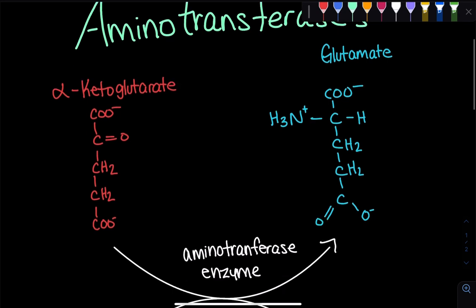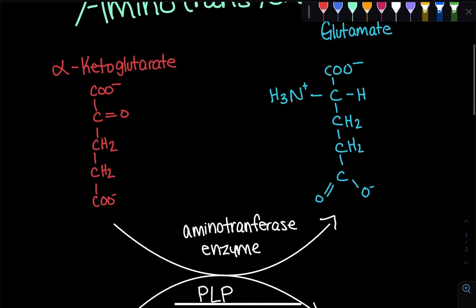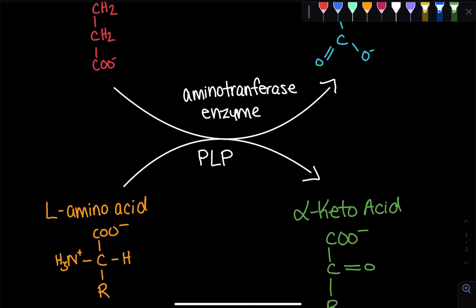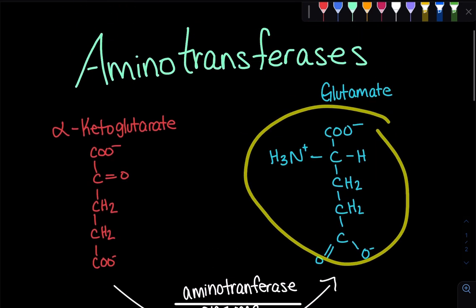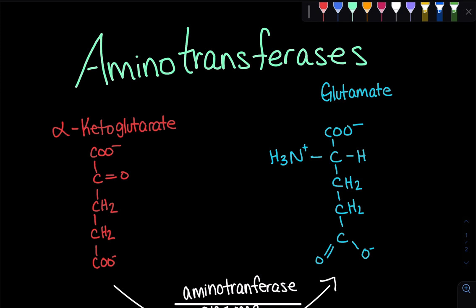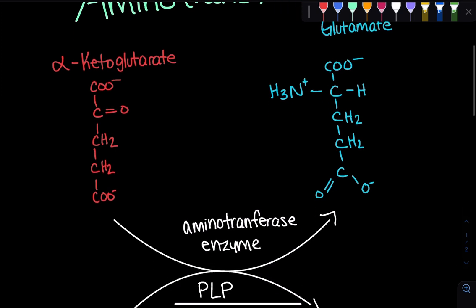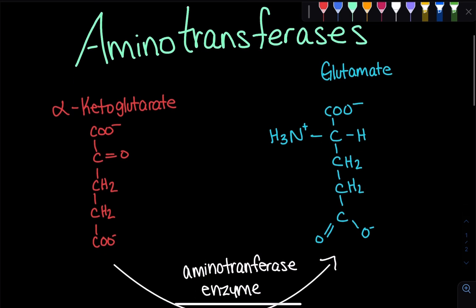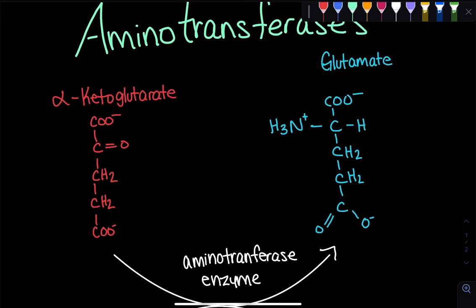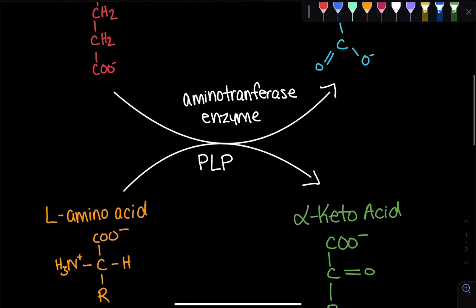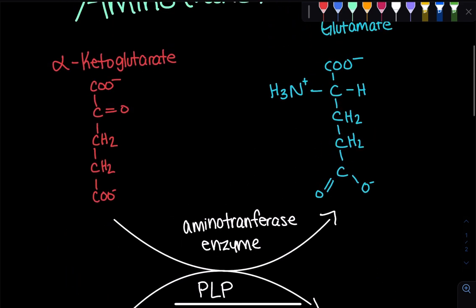This simple reaction of just transferring an amino group has a vital purpose in the body because glutamate, or whatever you're trying to produce, for example, alanine or any other amino acid, has a very vital function in the body. What's important to note is that aminotransferases transfer an amino group, often from an L-amino acid, and it uses that PLP cofactor, which is able to stabilize the carboanion intermediate in this reaction.